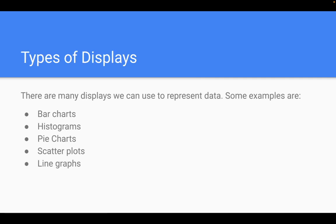So these are some of the different types of displays we're going to use to represent data. We're going to use bar charts, histograms, pie charts, scatter plots, and line graphs. Alright, so let's go through a real quick example of each of these different types of displays, and we will get on to making them.